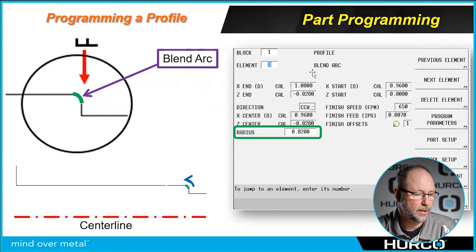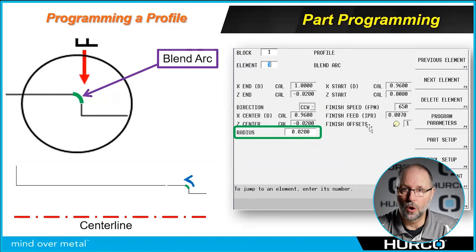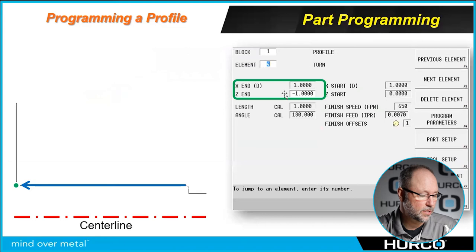When we get there, we're going to add a blend arc. The blend arc will ask for the radius. You'll notice when you do a face, turn, blend arc, and so forth, everything is grayed out and I can only change the data that has something to do with that particular feature. In this case, I have a blend arc. The only thing I can change is the radius because that's all it's asking for.